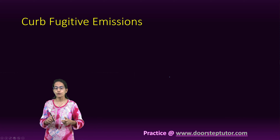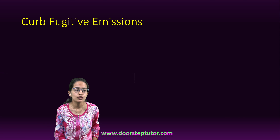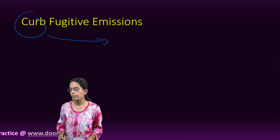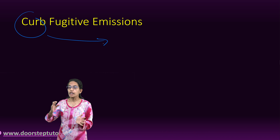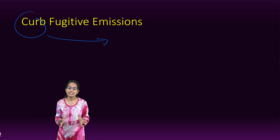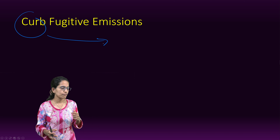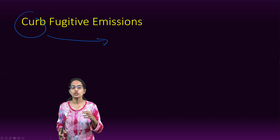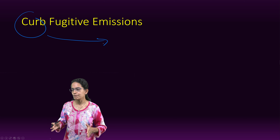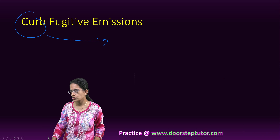So it's really important to identify and curb fugitive emissions. When we talk about curbing fugitive emissions, it's mainly because of the leakages. A good idea would be to reduce the leakage, to have regular checking, regular maintenance, and gas detection devices could be installed.